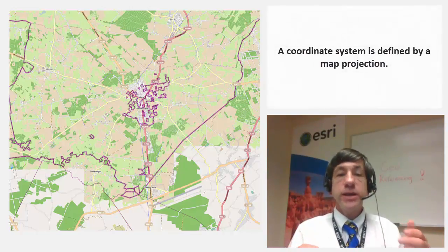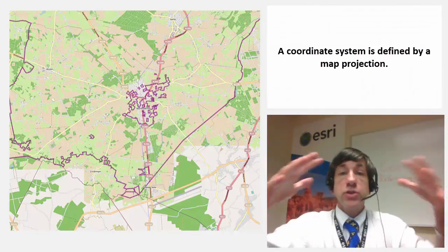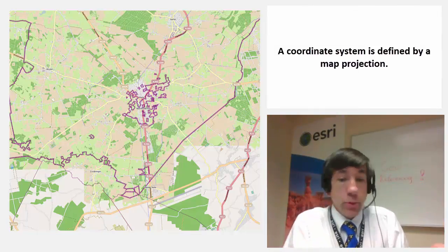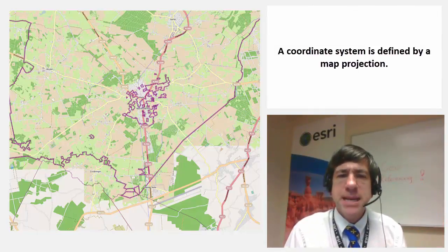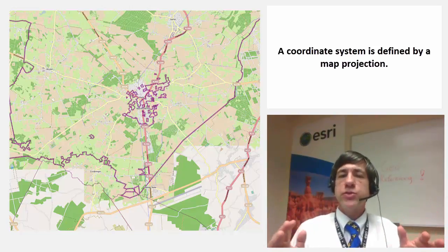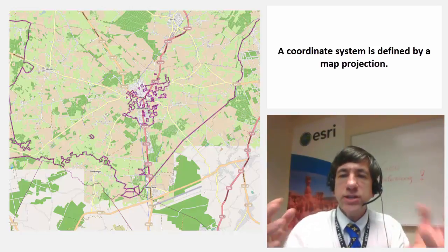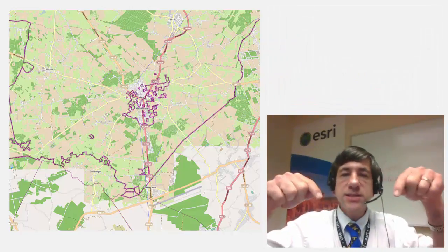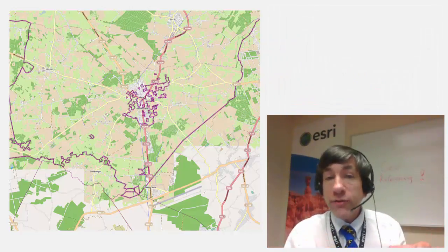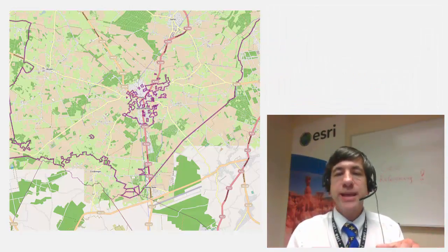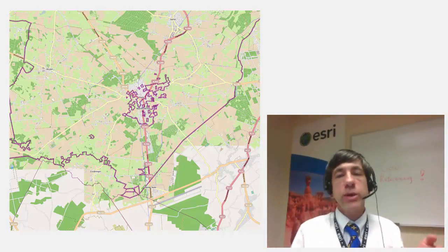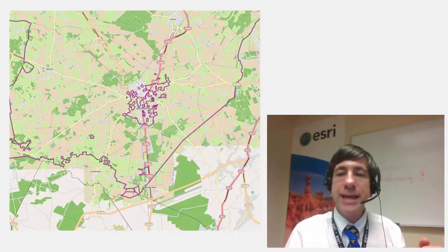A map coordinate system is defined using a map projection — a method by which the curved surface of the Earth is portrayed on a flat surface, a paper map or a flat computer screen. When you geo-reference your raster data, you define its location using map coordinates and assign the coordinate system of the data frame. Geo-referencing raster data allows it to be viewed, queried, and analyzed with other geographic data — again, the whole power of a GIS.